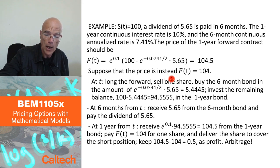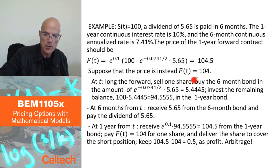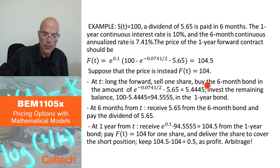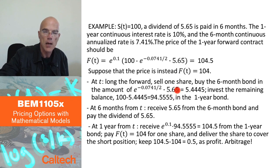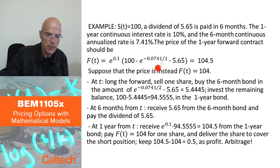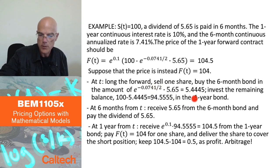I have to deliver the dividends when they come. I want to have enough money to do that in six months — I know it's going to be $5.65. So what I'm going to do is buy the six-month bond in an amount which is the present value of $5.65, so that I have exactly $5.65 in six months. Since the six-month rate annualizes to 7.41%, I use the same discount factor, discounting $5.65 by the six-month rate, and I get $5.4445.